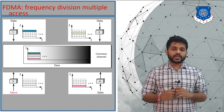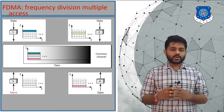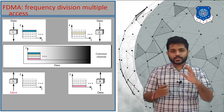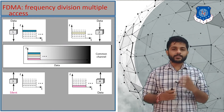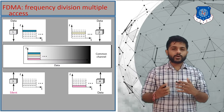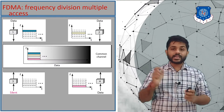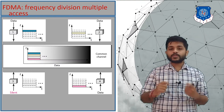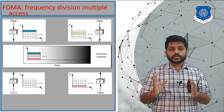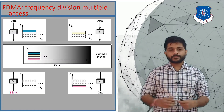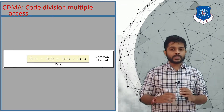A practical example of FDMA is the radio. When you tune to a particular frequency, you receive that radio station. For example, Radio Mirchi is at 98.3 MHz and Red FM is at 92.5 MHz. When you tune to 98.3 MHz you receive that station's signals. The disadvantage is that the bandwidth is limited to that particular frequency allocation.